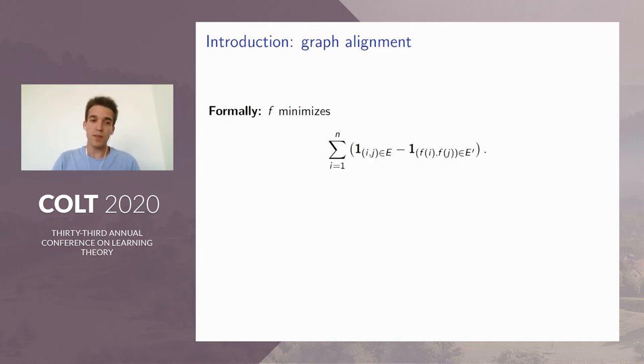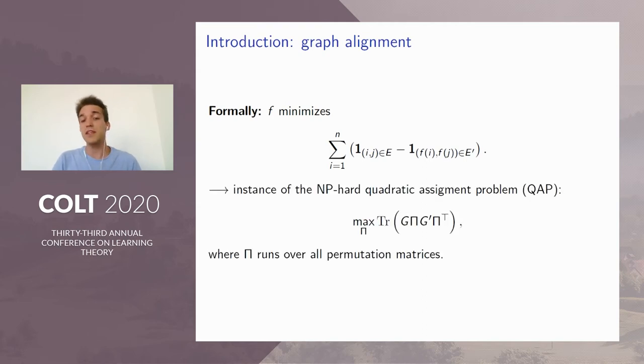Formally, f will minimize the following quantity. This can be written as an instance of the quadratic assignment problem, which is the maximization of the trace of G pi G prime pi transpose, where pi runs over all permutation matrices, and G denotes both the graph and the adjacency matrix. This maximization problem is unfortunately known to be NP-hard. As you can see, graph alignment is a difficult problem. Even its simplest version, which is the isomorphism case, is also non-polynomial.